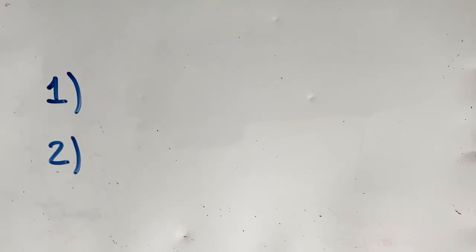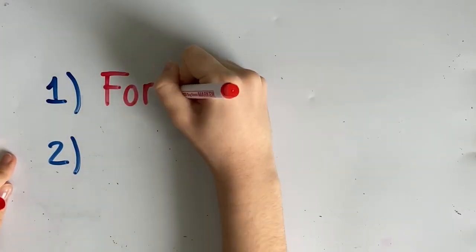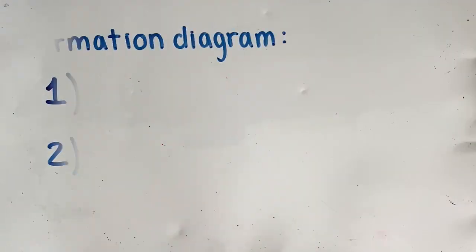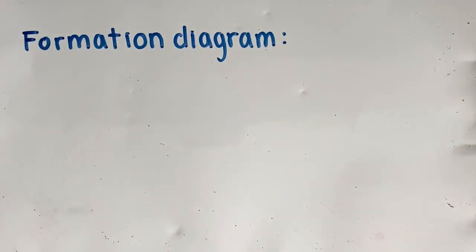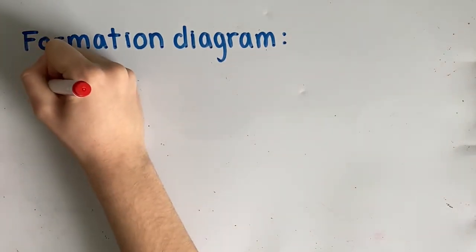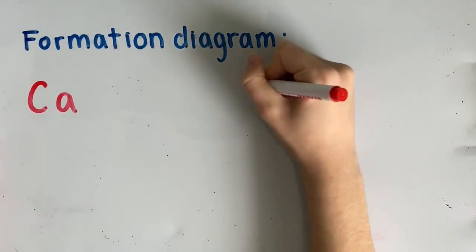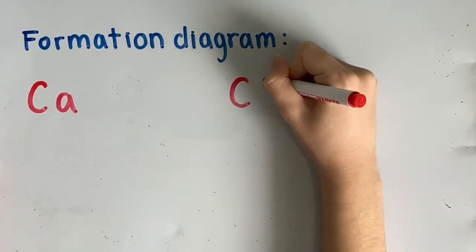Now, here is how you draw a Lewis dot diagram. In a Lewis dot diagram, there are two parts: the formation diagram and the final diagram. First, let's draw the formation diagram. Since you know there is one calcium atom, you draw only one calcium atom. Since there are two chlorine atoms, you draw two chlorine atoms, one on top of the other.